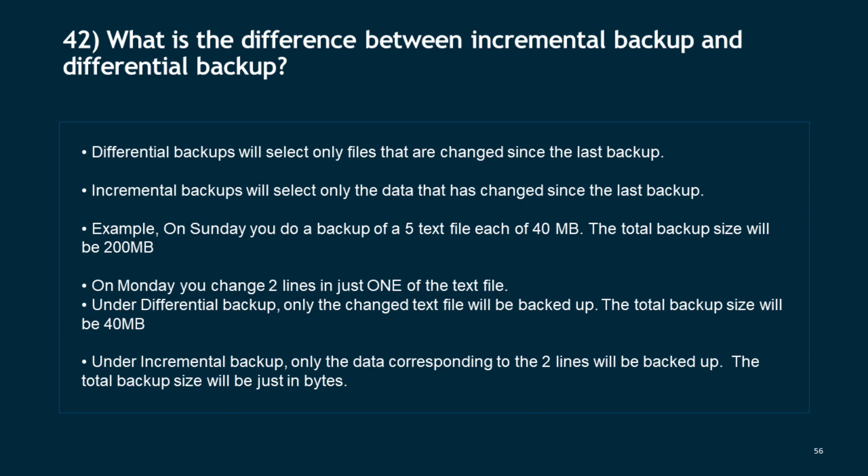Question 42: What is the difference between incremental backup and differential backup? Differential backups select only files that have changed since the last backup, while incremental backups select only the data that has changed since the last backup. For example, on Sunday you back up 5 text files each of 40 MB — total 200 MB. On Monday you change two lines in one file. Under differential backup, only the changed text file is backed up — total 40 MB. Under incremental backup, only the data corresponding to the two changed lines is backed up — total size is just bytes.